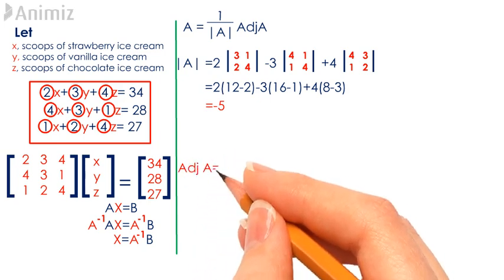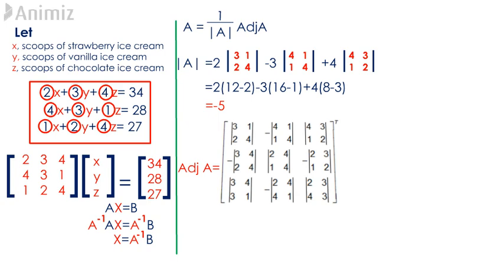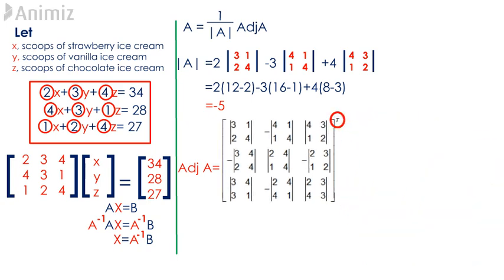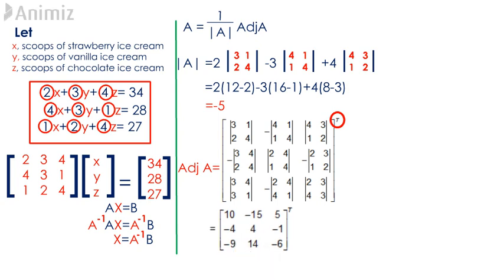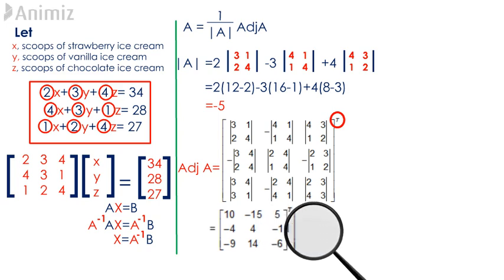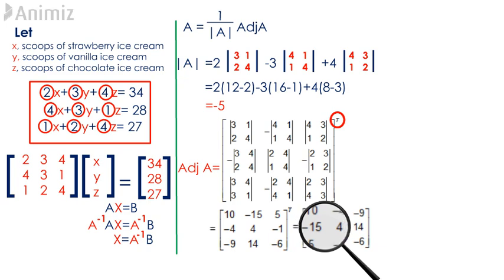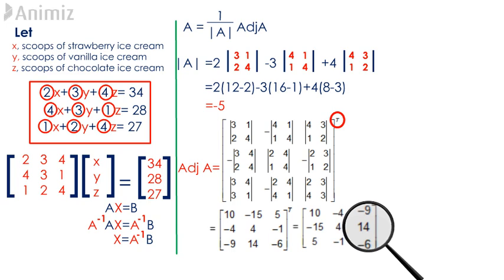Now let's look for the adjoint matrix of A. Bear in mind that the adjoint matrix of A is the transpose of its cofactor matrix. The cofactor matrix of A contains the elements 10, negative 15, 5, negative 4, 4, negative 1, negative 9, 14, negative 6. Interchanging the rows and columns of the cofactor matrix gives us the adjoint matrix of A, which is 10, negative 4, negative 9 in the first row; negative 15, 4, 14 in the second row; and 5, negative 1, negative 6 in the third row.